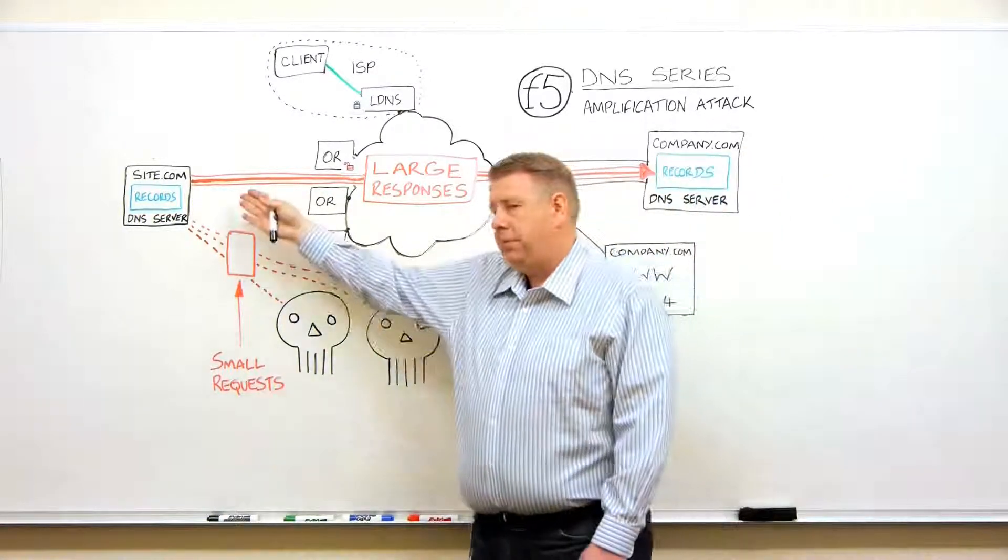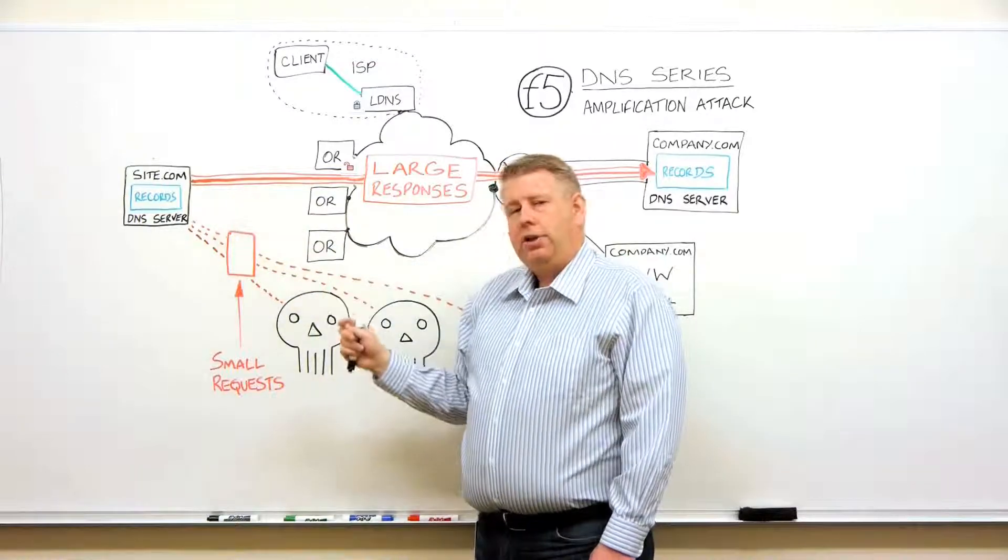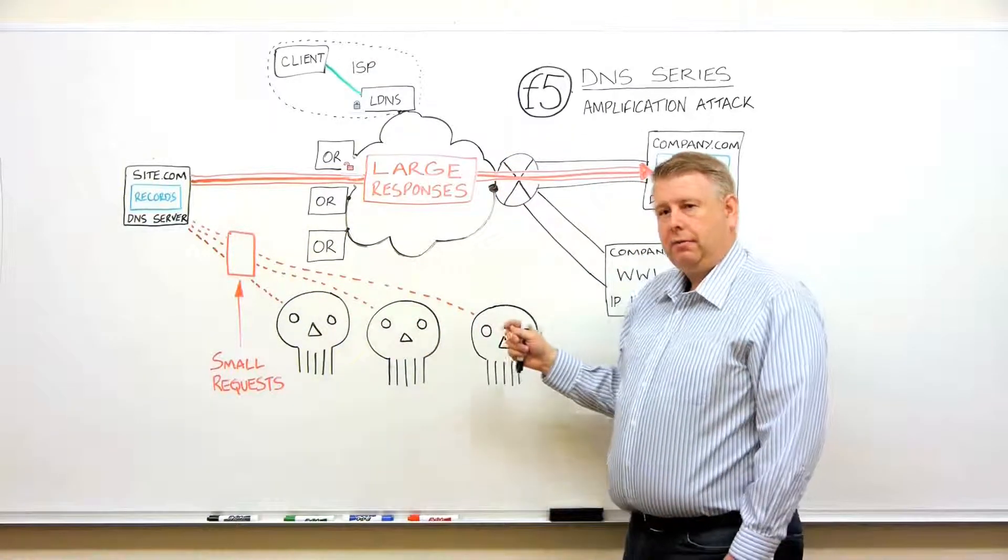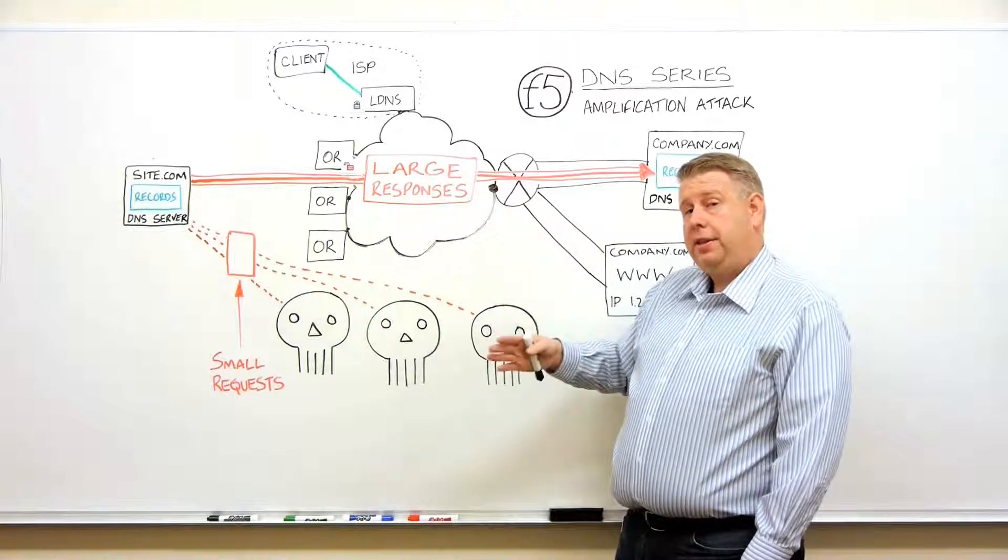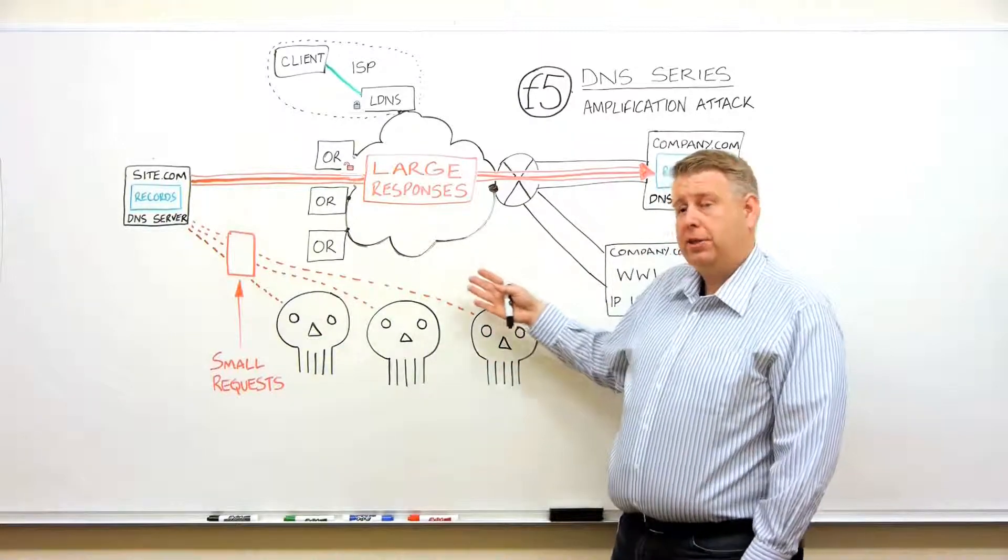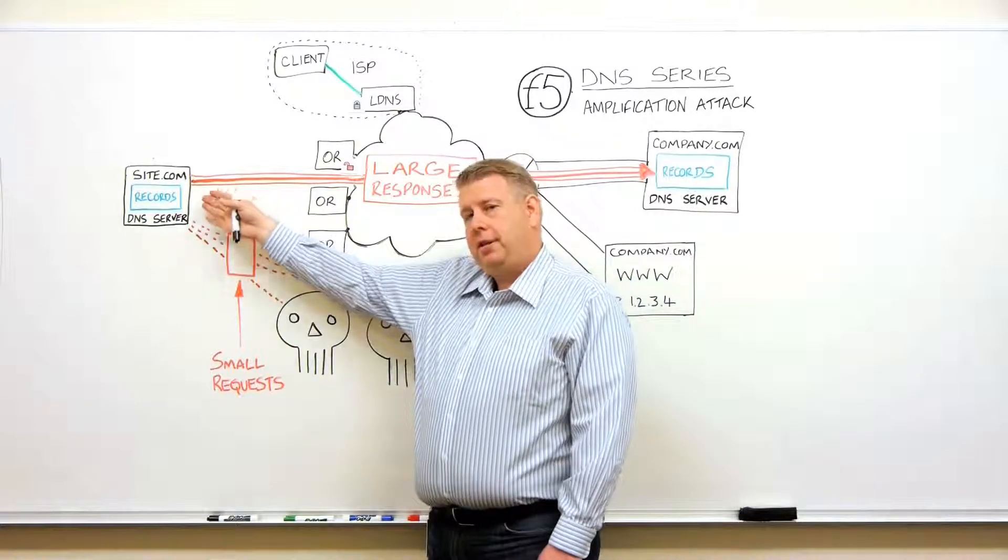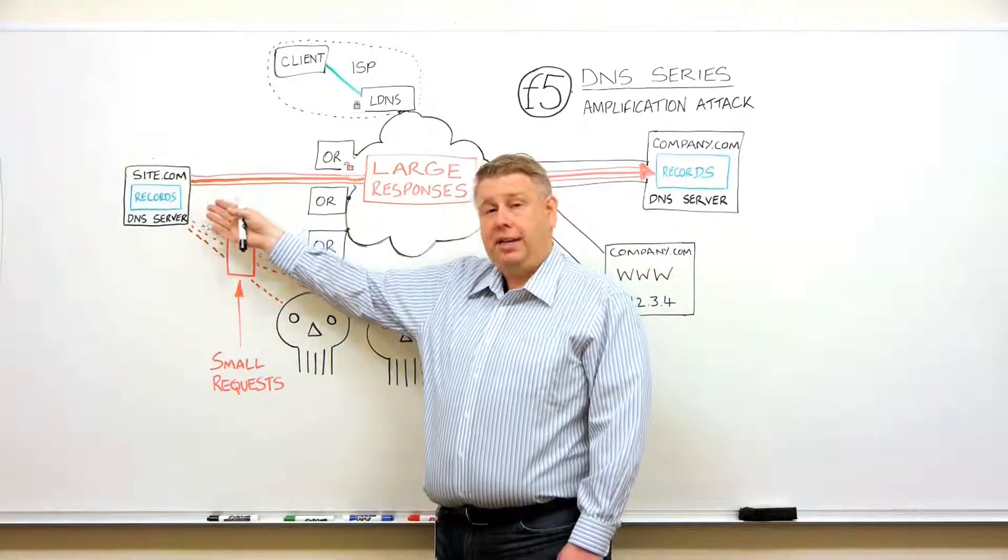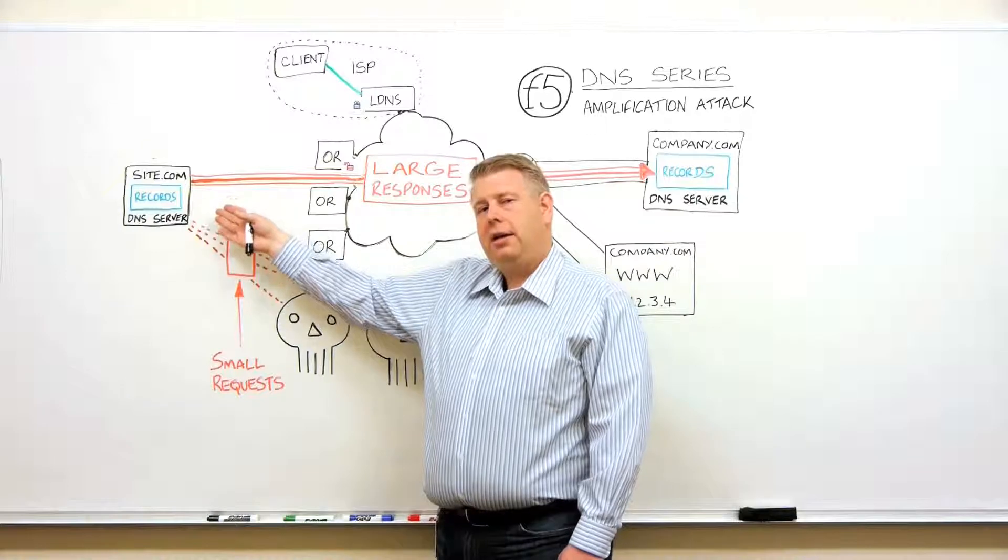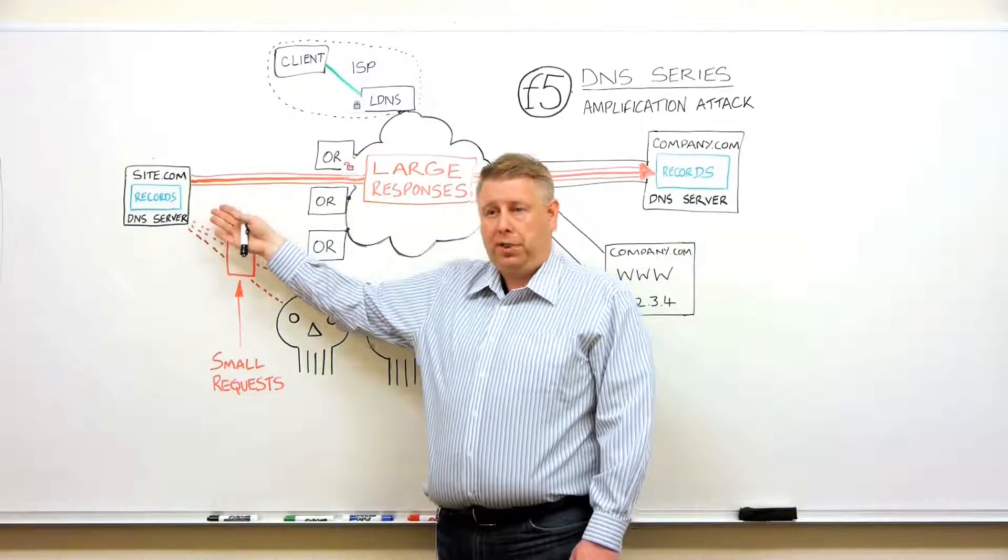There's another way that they can amplify the attack. They can also ask for DNSSEC. We aren't talking about DNSSEC in this particular segment—that might be a discussion for a future segment. Just suffice it to say that if you add DNSSEC onto it, it adds a lot of keys and signatures, and that can make it ten times larger than a normal response.